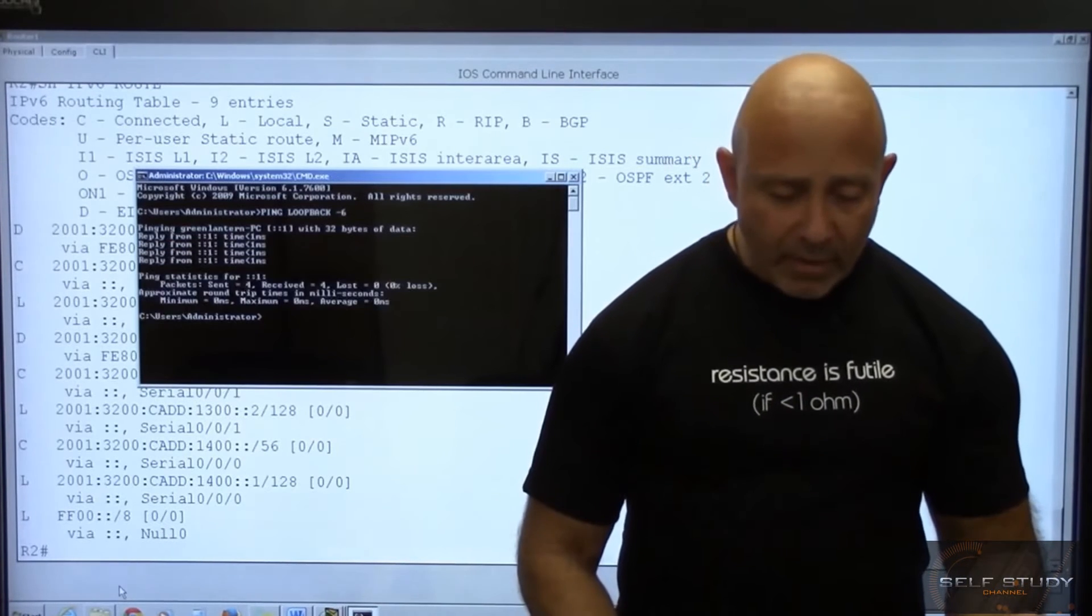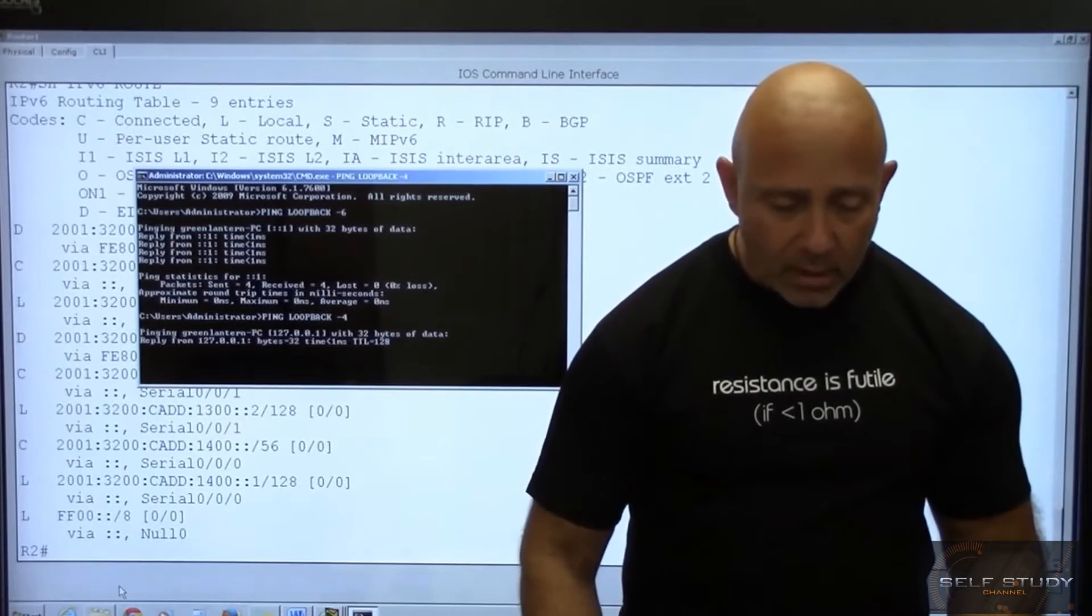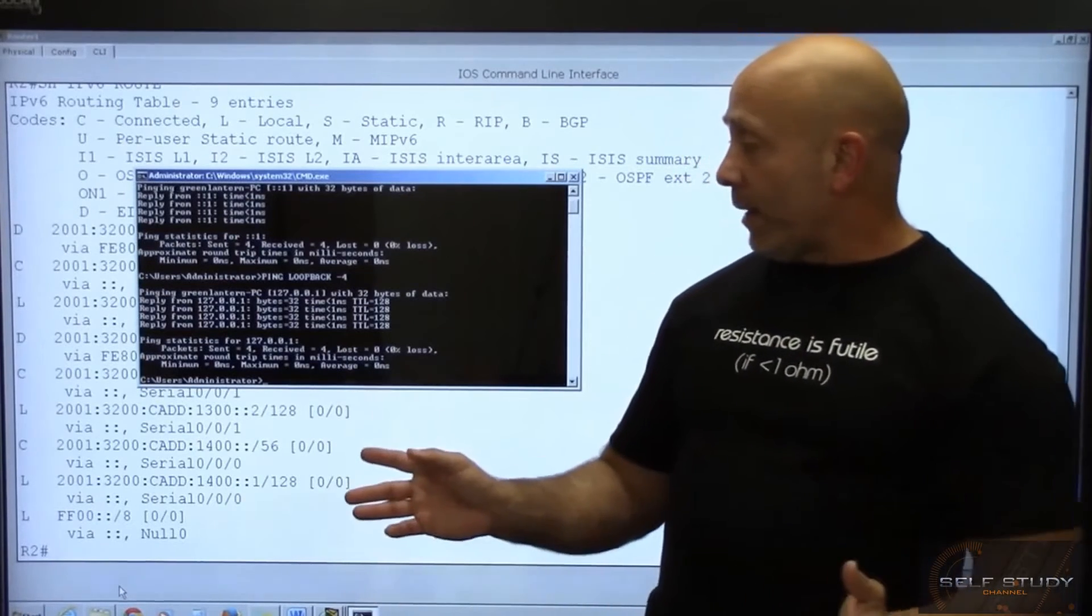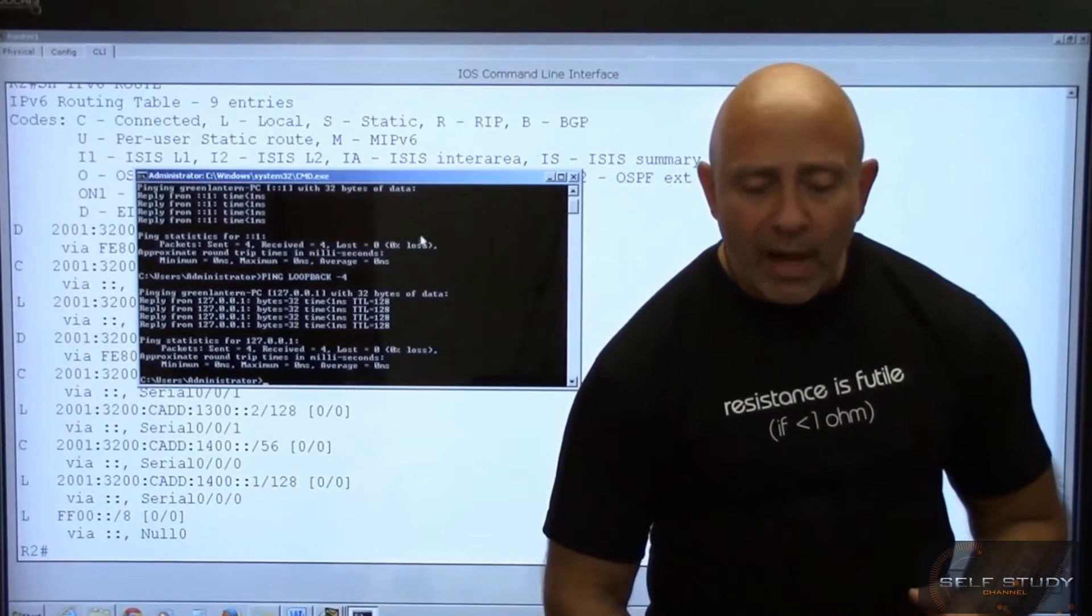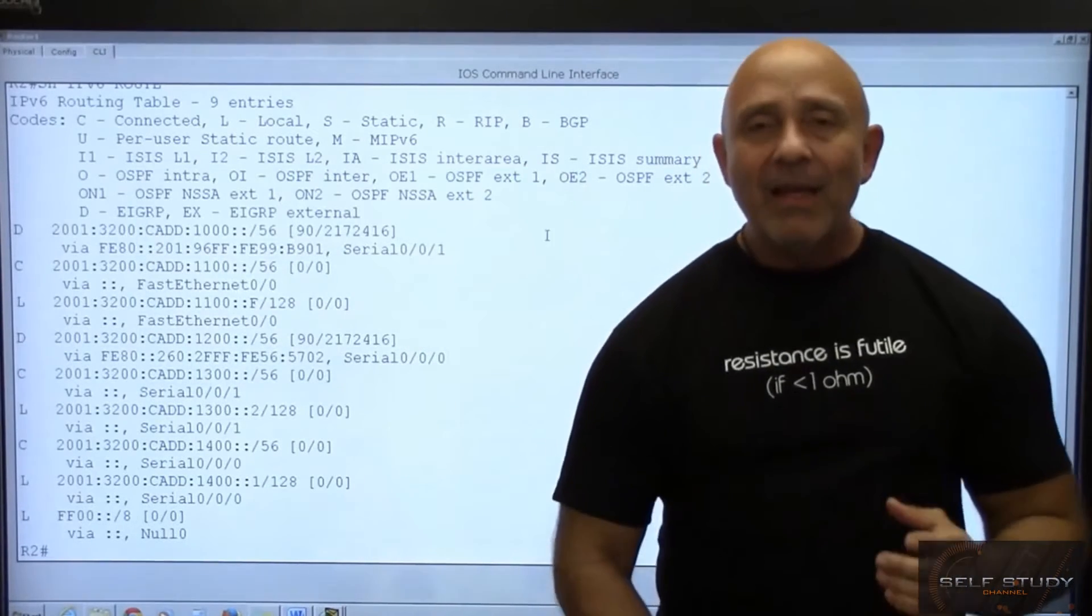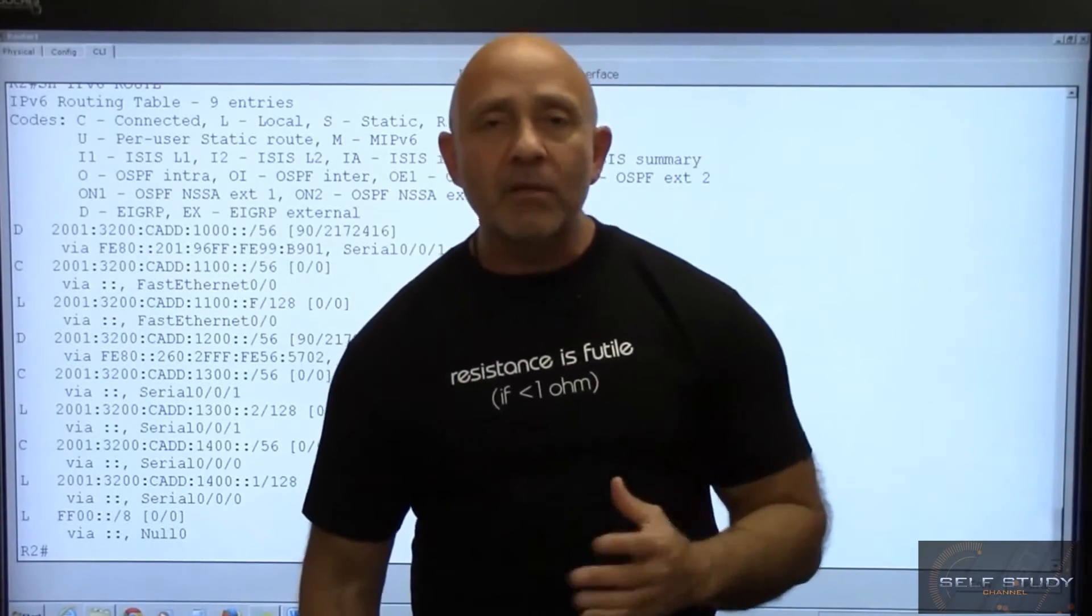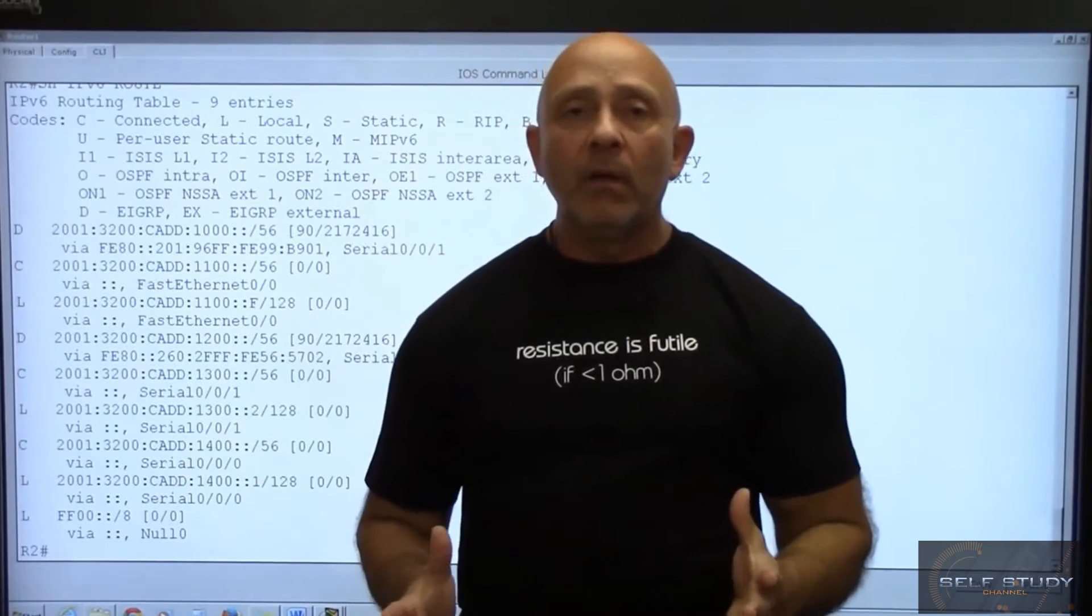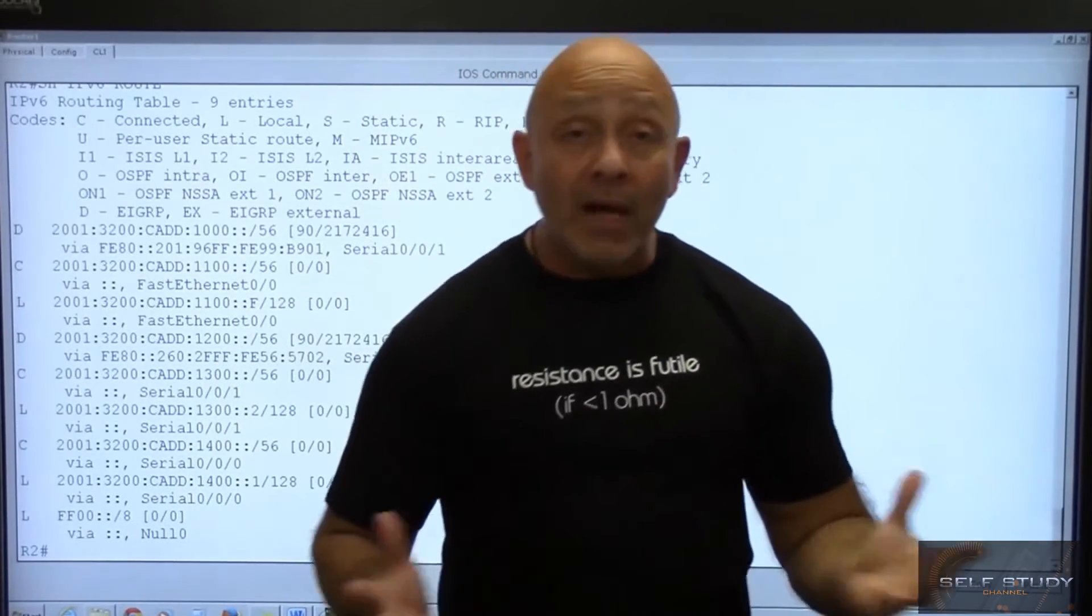If I were to put minus 4 I will get the version 4 loopback address using the little switches. So you can see the dual stack transition mechanism is great because you're not always going to walk into a network and you're going to build it from the ground up.